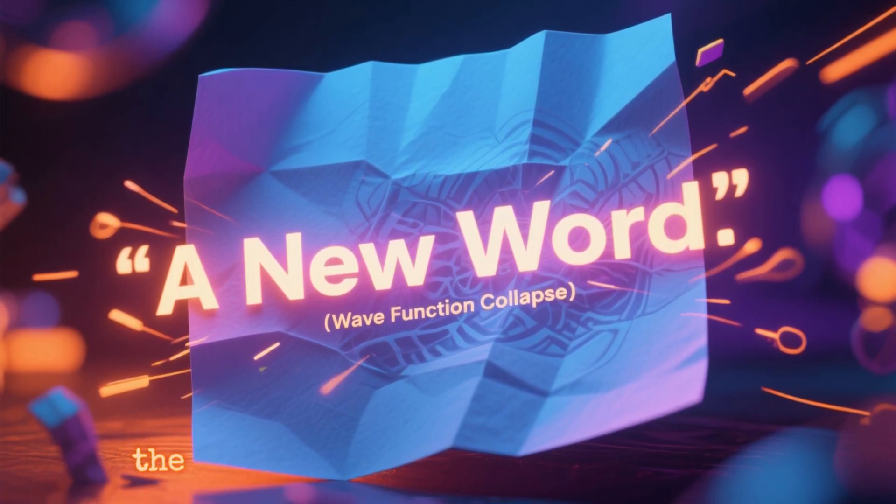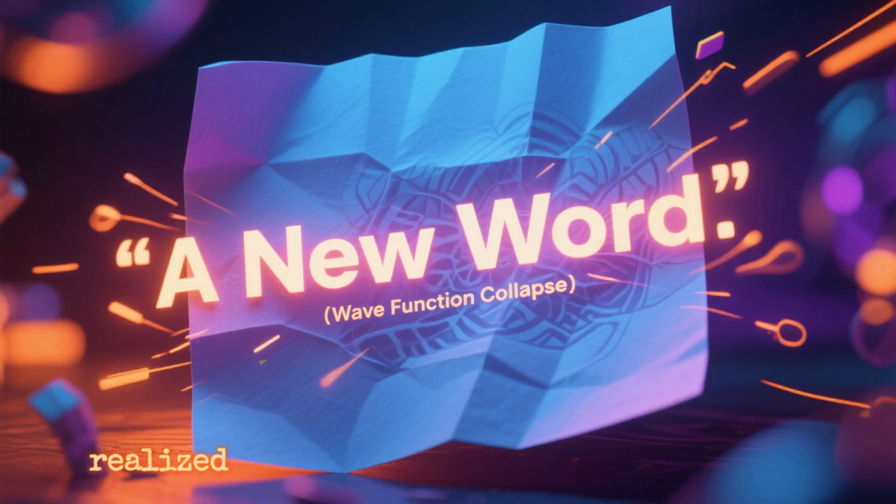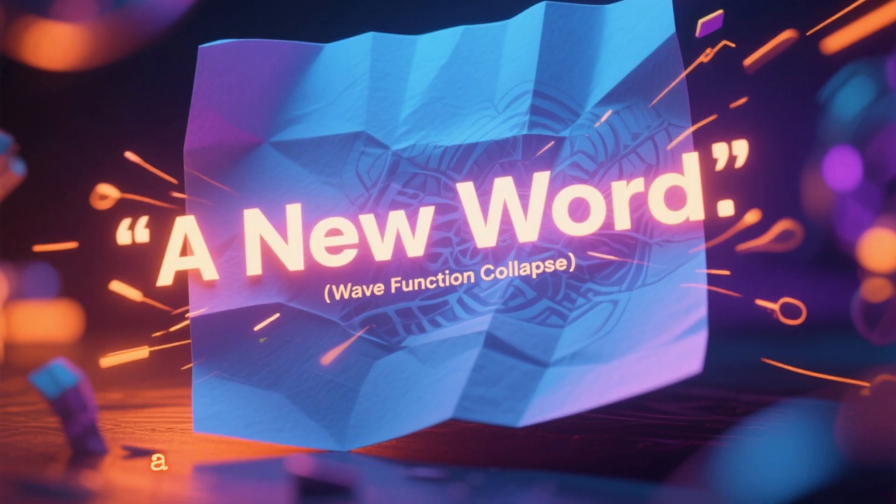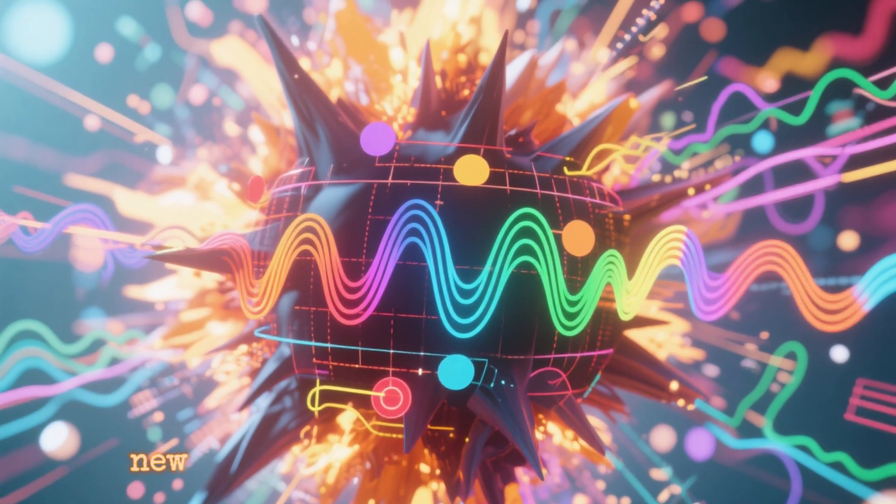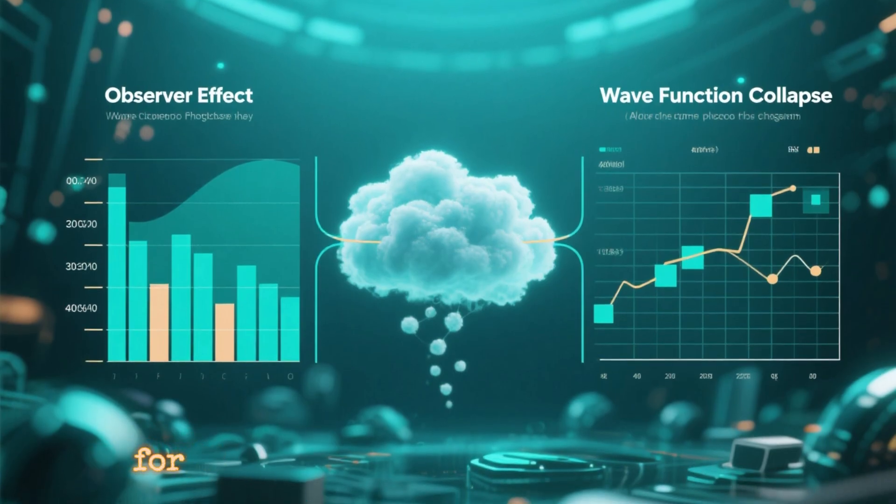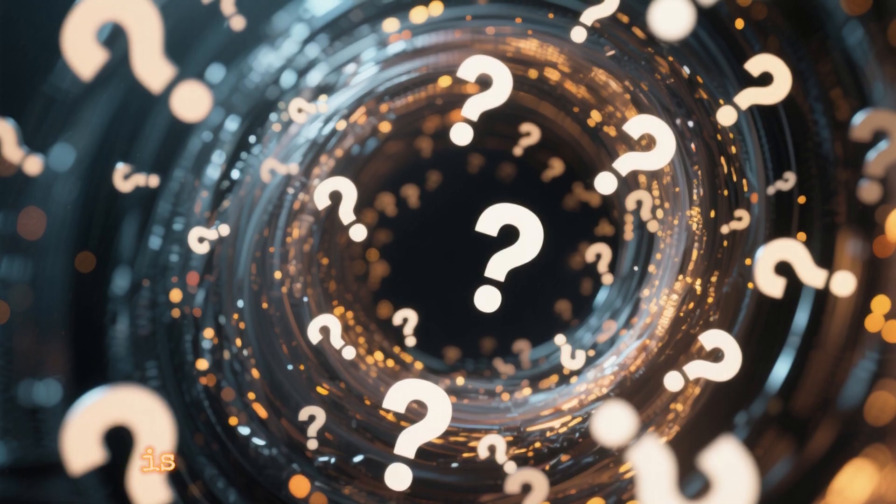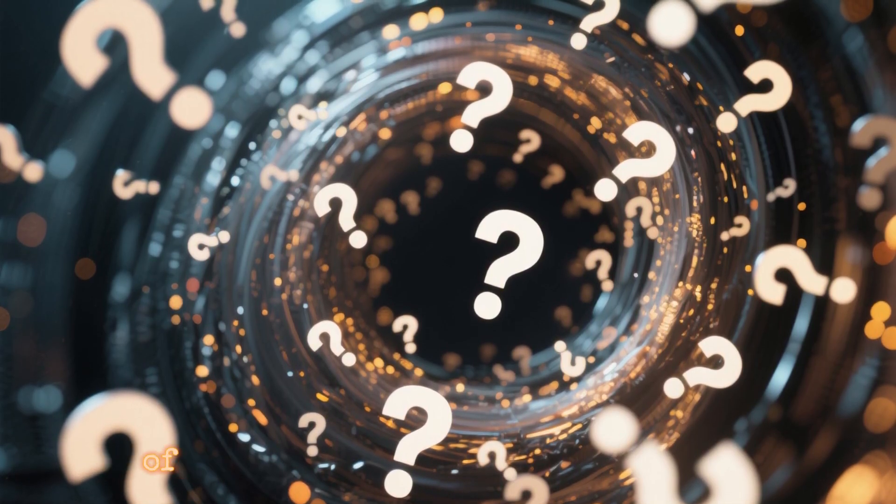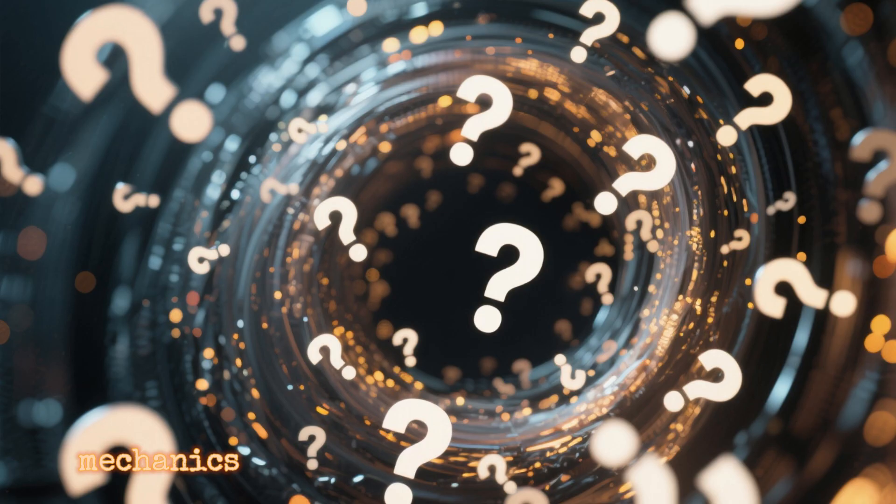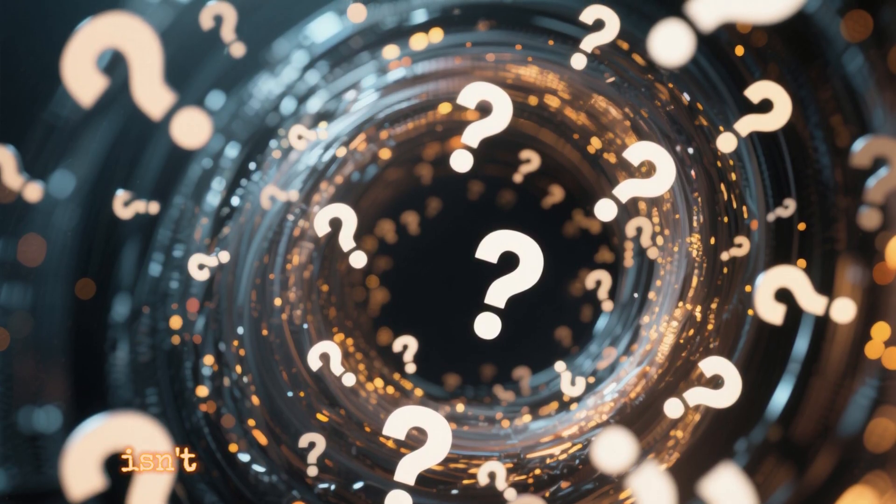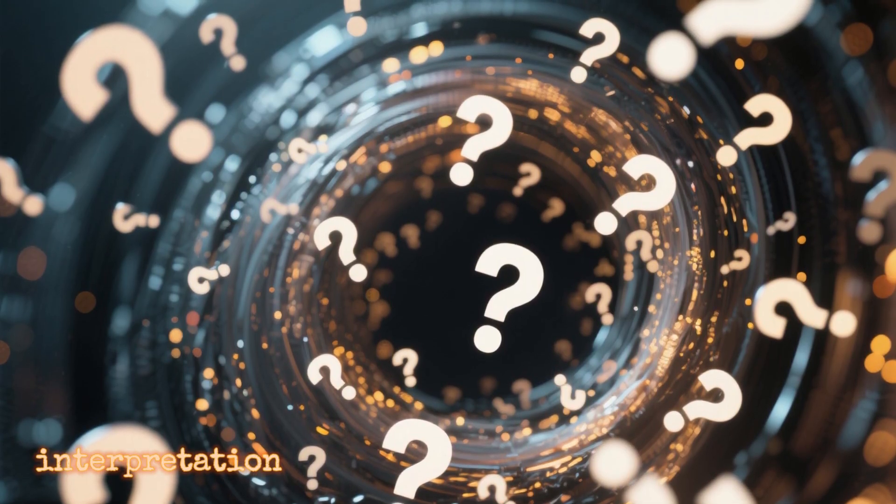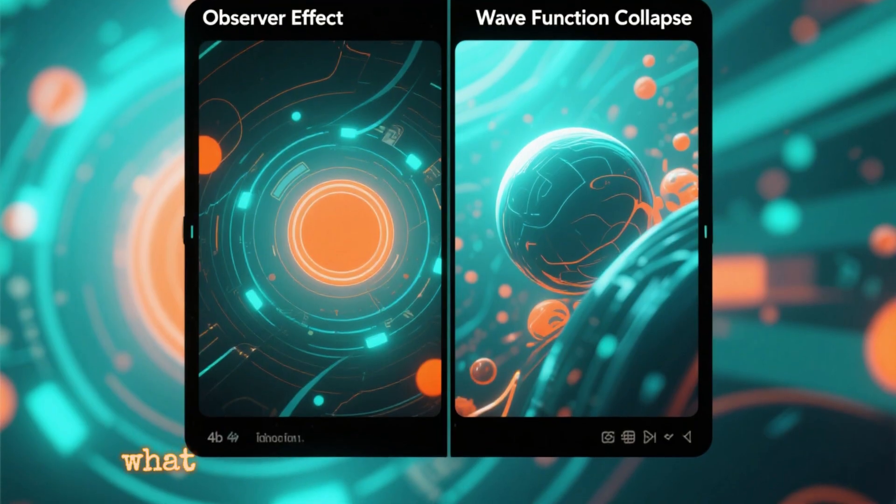But then again, when I read the paper, I realized that what they'd done is basically what physicists do best. They invented a new word. In this case, the new word is the collapse of the wave function. They use this as a synonym for the observer effect. This is really confusing, because the collapse of the wave function is a term from an interpretation of quantum mechanics, whereas the observer effect isn't necessarily tied to any particular interpretation.